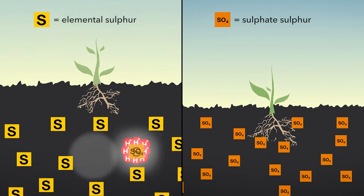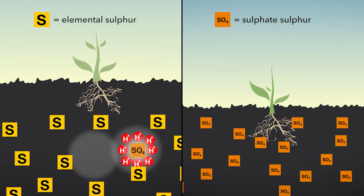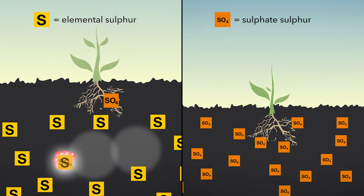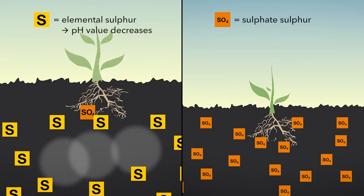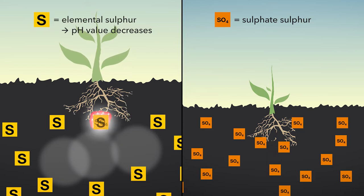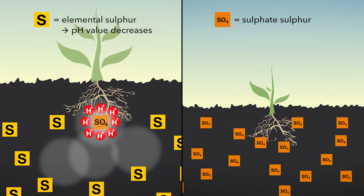If sulfur is present in its elemental form, it has first to be converted into sulfate before it can be absorbed by the plant. That takes time, and during the microbial conversion process, protons are released, reducing the pH level of the soil.